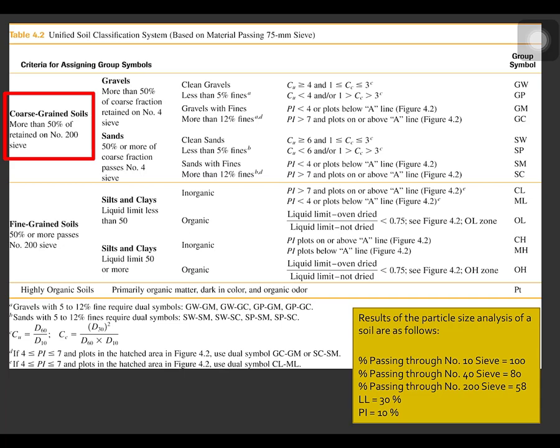Since the percent passing number 200 is 58, therefore, the retained soil on the number 200 sieve is only 100 minus 58, which is 42. Therefore, it is not a coarse grain soil. And the definition for fine grain soil is 50% or more passes the number 200 sieve. Since the percent passing number 200 sieve is 58, it is considered as a fine grain soil.